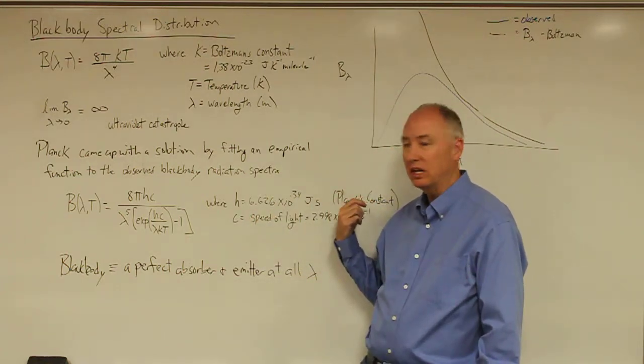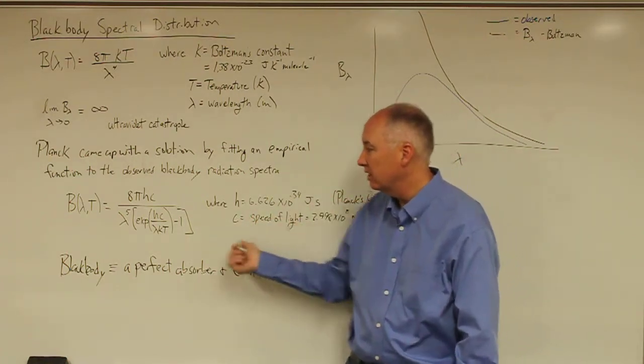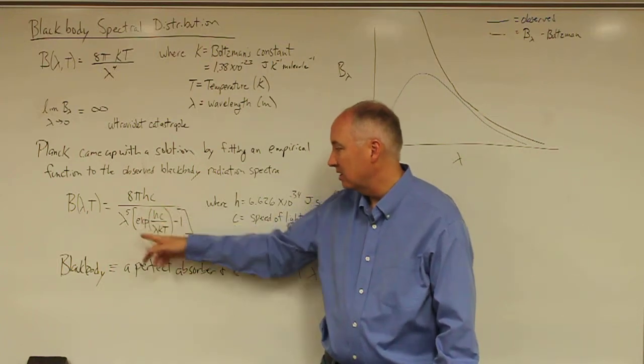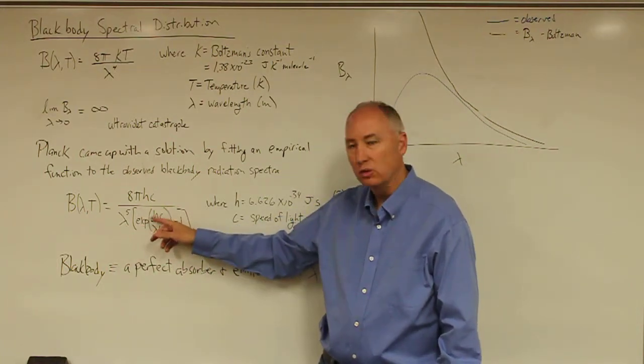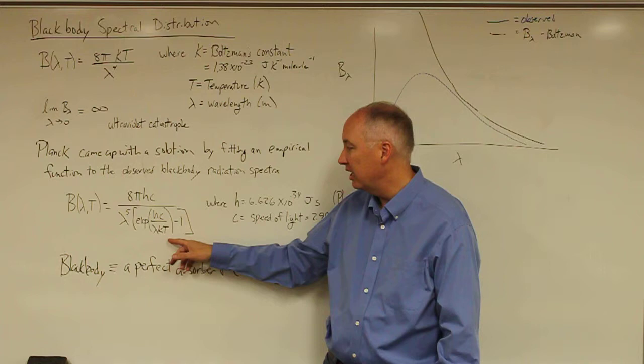where h is now Planck's constant, c is the speed of light, divided by wavelength to the fifth times the exponential of this quantity hc over lambda kt minus one.